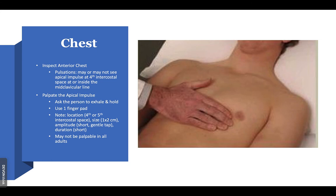Inspect the anterior chest — you may or may not be able to see pulsations at the apical pulse at the fourth intercostal space at or inside the midclavicular line. To palpate the apical pulse, have the person exhale and hold, use one finger pad, and note the location, size, amplitude, and duration. The apical pulse may not be palpable in adults at all. Percussing the border of the heart is useful when you suspect a pericardial effusion, which can accumulate fluid and eventually cause cardiac tamponade — a medical emergency.